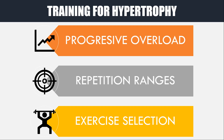While there is not one best way to train for hypertrophy, there are certainly considerations to abide by, and these considerations can be practically implemented in many different ways. First, we need to explore how to best apply progressive overload. Second, what repetition ranges should be employed. And lastly, what exercises should we select?